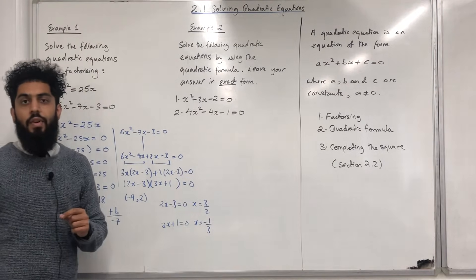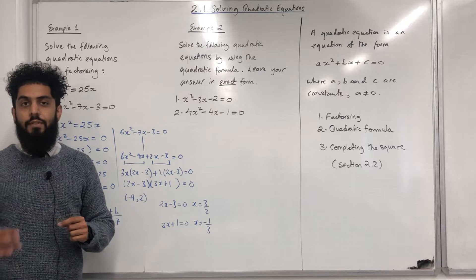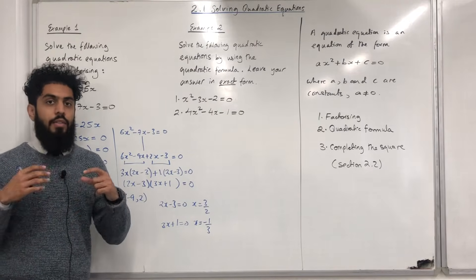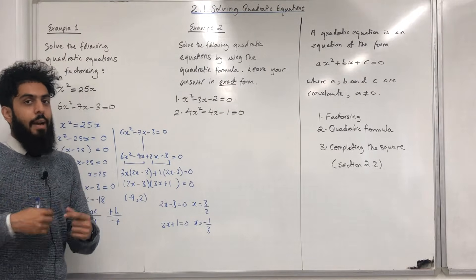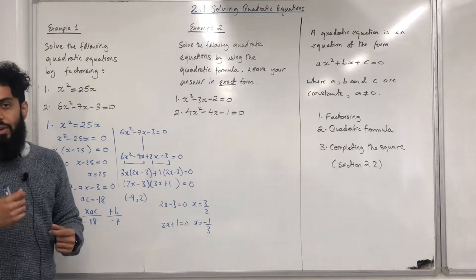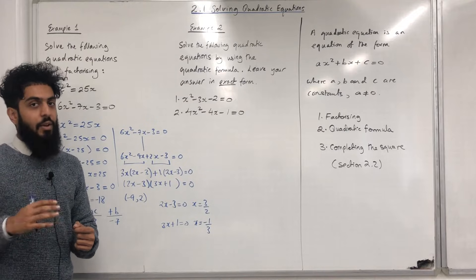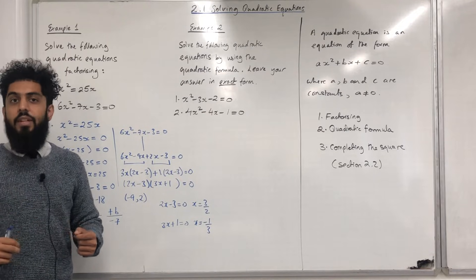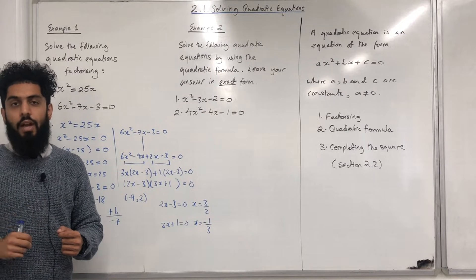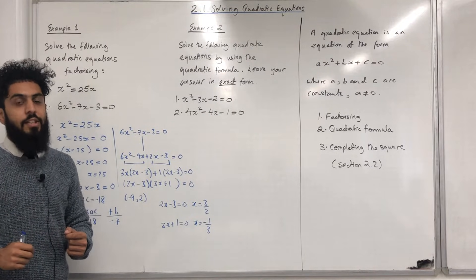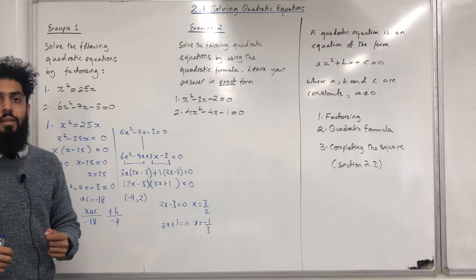Not all quadratic equations have two solutions. The way we work out how many solutions a quadratic equation has is by looking at something called the discriminant. I will be covering the discriminant in section 2.5.